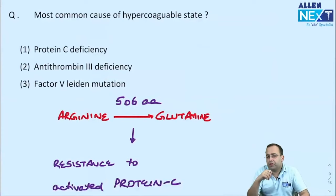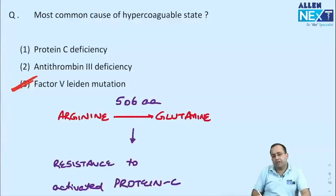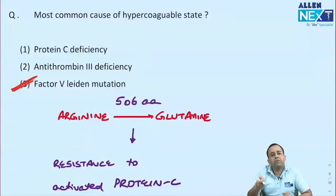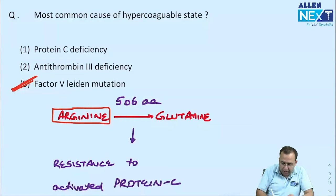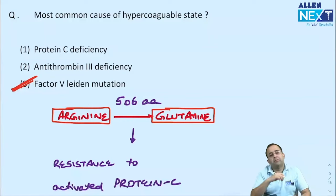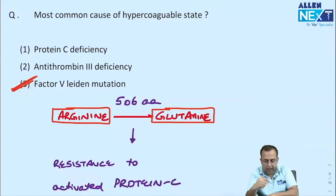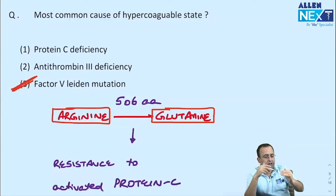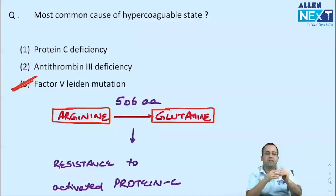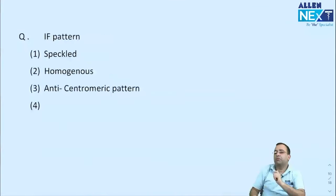Most common genetic cause of hypercoagulable state: Factor V Leiden mutation. The mutation involves conversion of arginine to glutamine at the 506th amino acid position, leading to resistance to activated protein C, which in turn leads to a hypercoagulable state. Most students should have gotten this right.